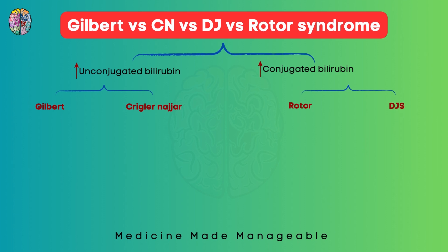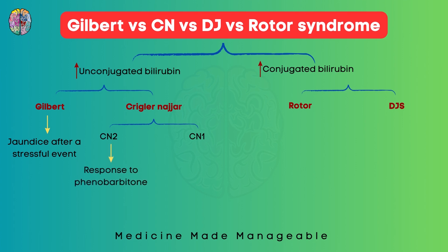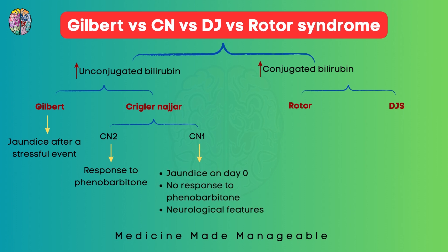If the question mentions jaundice after a stressful event — such as smoking, heavy exercise, illness, or drinking alcohol — think Gilbert syndrome. If the patient is a child or infant and phenobarbitone improves the condition, think Crigler-Najjar syndrome type 2. If there is jaundice on day zero, no response to phenobarbitone, or neurological features, then think Crigler-Najjar syndrome type 1.